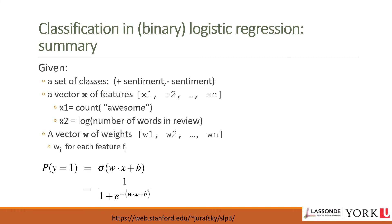Summarizing binary logistic regression: given a set of classes (positive or negative sentiment) and a feature vector x from x_1 to x_n — where x_1 might be the count of 'awesome' and x_2 the log number of words in the review — and a weight vector w from w_1 to w_n assigned to the features, we calculate p(y=1) = σ(w · x + b) using the sigmoid function.